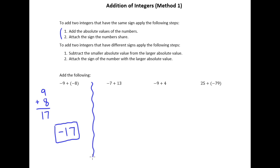Let's take a look at the next example: negative 7 plus 13. So this is a situation where the signs are different, so now we're in this situation here. To add two integers that have different signs, we'll apply the following steps. First, we're going to subtract the smaller absolute value from the larger absolute value.